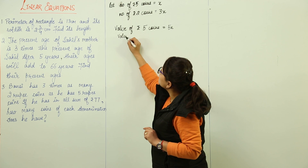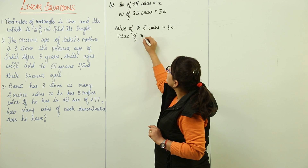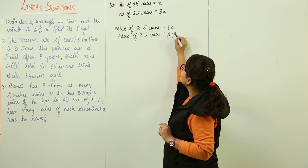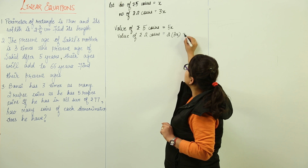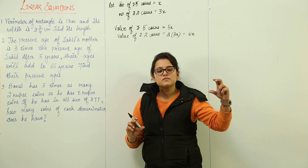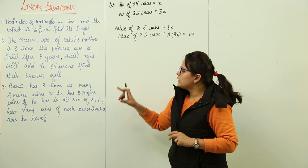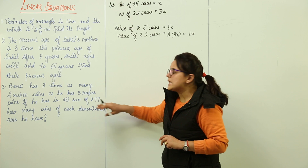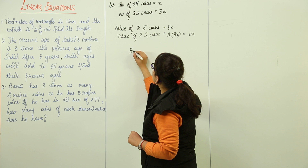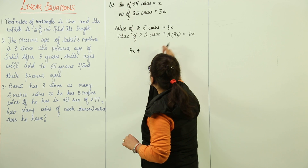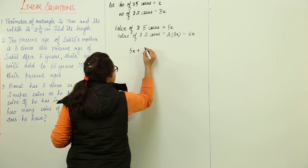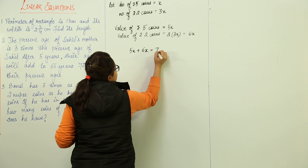Similarly, if you have two rupee coins in three X, the value of two rupee coins will be two into three X, that is six X. Now you have all the values with you — five rupee coins value is five X and two rupee coins value is six X. The question says he has a total of 77 rupees, so we add them up: five X plus six X equals 77.